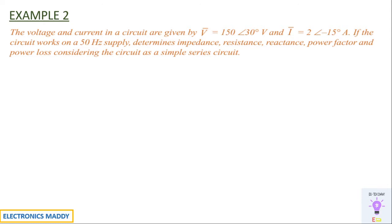Our second problem is similar to the first. The voltage and current are given in polar form, and the circuit works on a 50 Hz supply. Determine impedance, resistance, reactance, power factor, and power loss, considering it as a simple series circuit. They haven't specified RL or RC, but V has a phase angle of +30° and I has −15°, so I is clearly lagging behind V — confirming it is a series RL circuit.